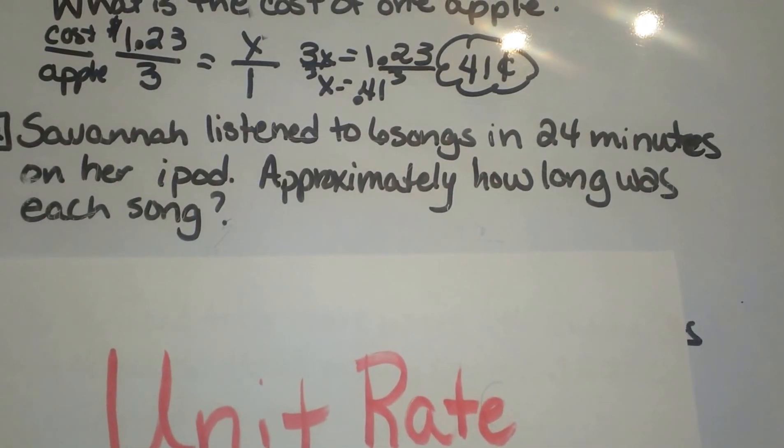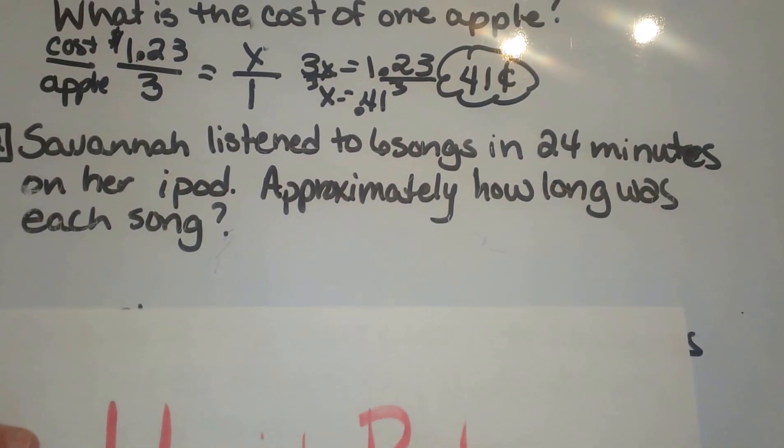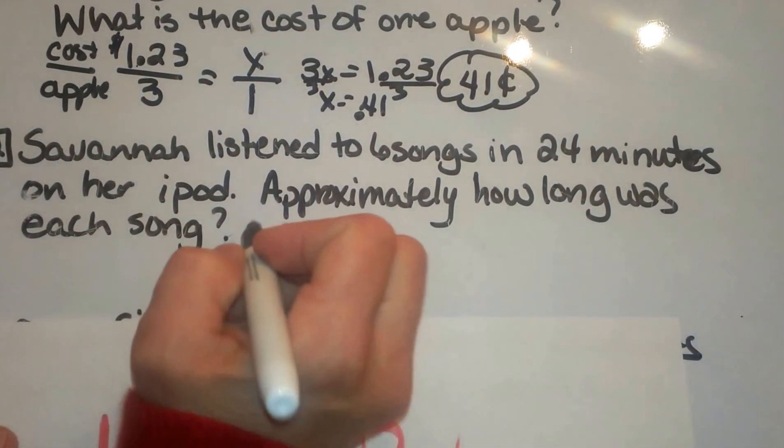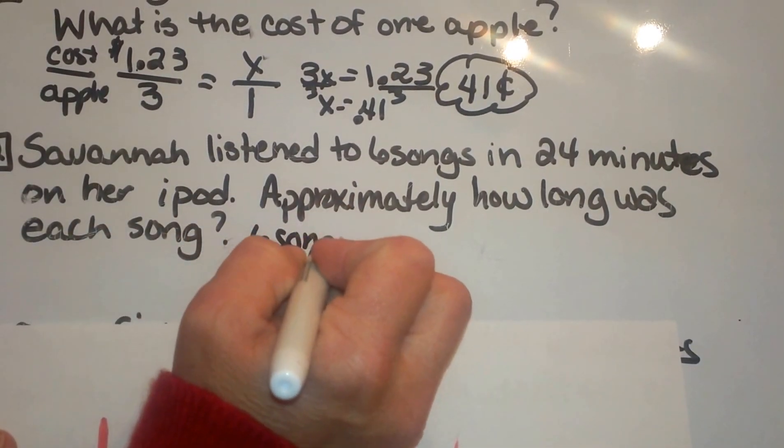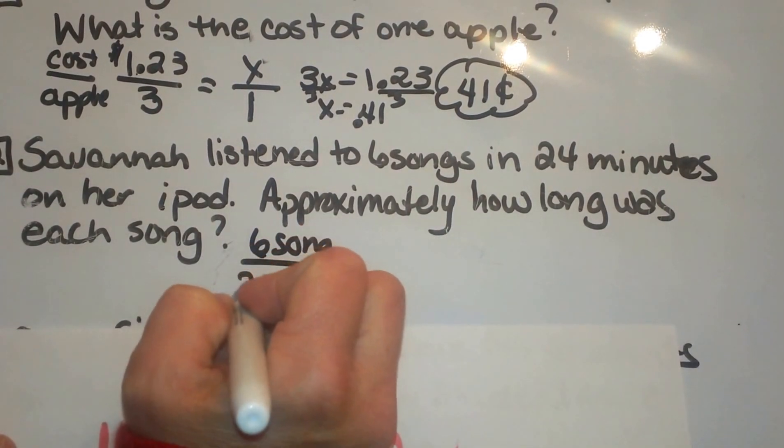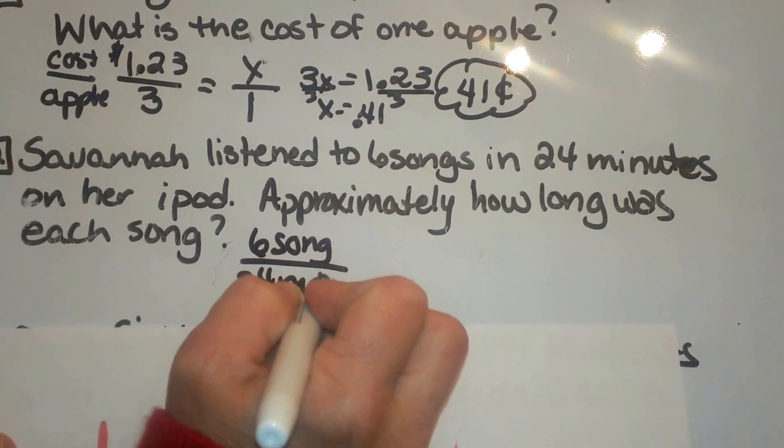Okay, so let us set up our ratio. We know we have six songs and it has taken us 24 minutes to listen to those six songs.